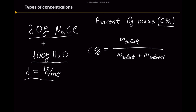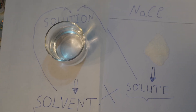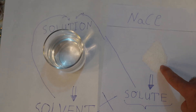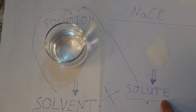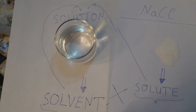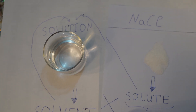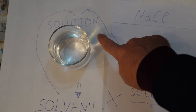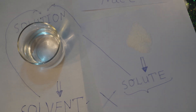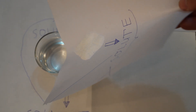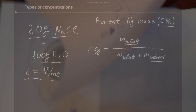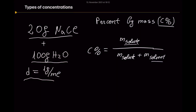Before I move further, I want to clarify what the solute and the solvent are. Take a look at this small clip I prepared separately. In this simple demonstration, we have sodium chloride — this one here — which is called the solute, and water, which is called the solvent. If we mix the solute with the solvent, the solute is going to dissolve in the solvent to form a solution.